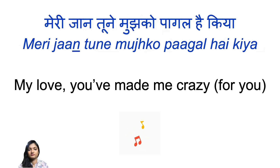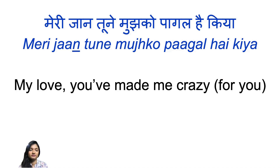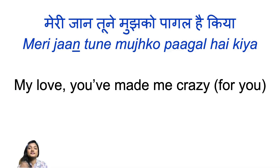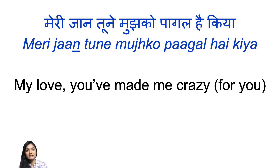Meri jaan tu ne mujhko paagal hai kia. The word jaan means my love — meri jaan is my love, my sweetheart, my darling. Tune is you, and since it ends with kia, we have tu ne and not tu. Tu ne kia is you did. Mujhko is to me, paagal is crazy. So: my love, you have made me crazy for you.